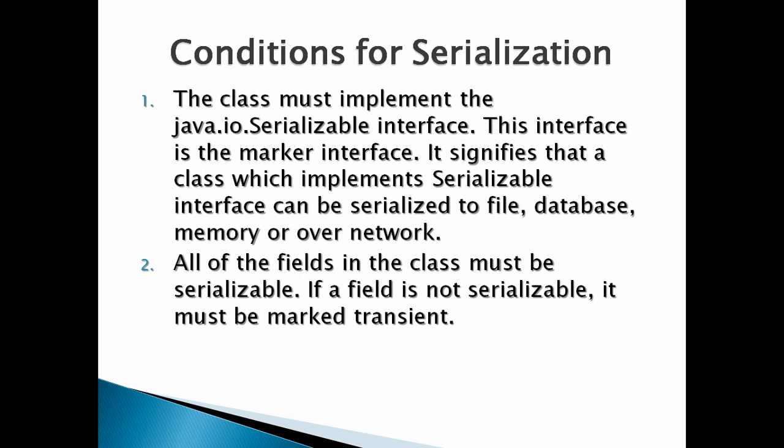Let's see the conditions which we need to implement in order to make a Java object serializable. The class must implement the java.io.Serializable interface. This interface is a marker interface — it signifies that a class which implements the Serializable interface can be serialized to a file.